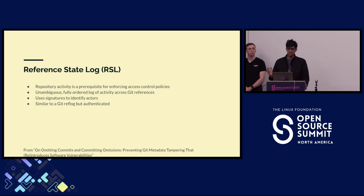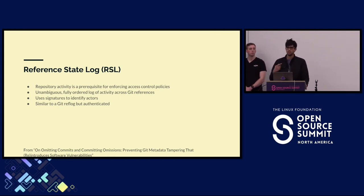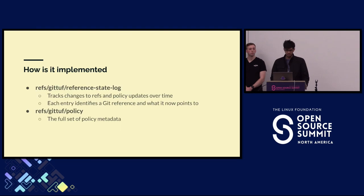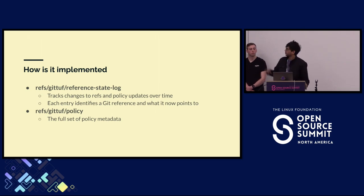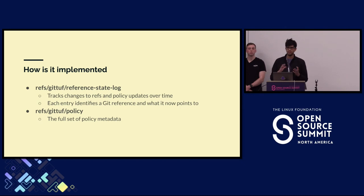The reference state log is actually embedded in the repository and shared across all contributors, and it's authenticated using signatures on each individual entry. We store all of this in custom Git references within the repository — we've carved out a namespace for ourselves with ref/gittuf. The RSL records every time a reference state changes within the repository. The policy metadata, which is very TUF-like, is stored in a separate namespace also tracked by the RSL. So the RSL gives information like: the main branch went from commit A to commit B, or the owners of the repository updated the policy applicable from that point in time onwards.